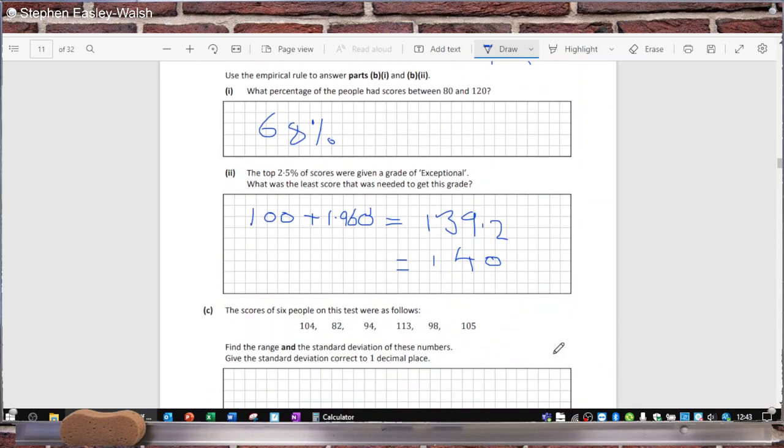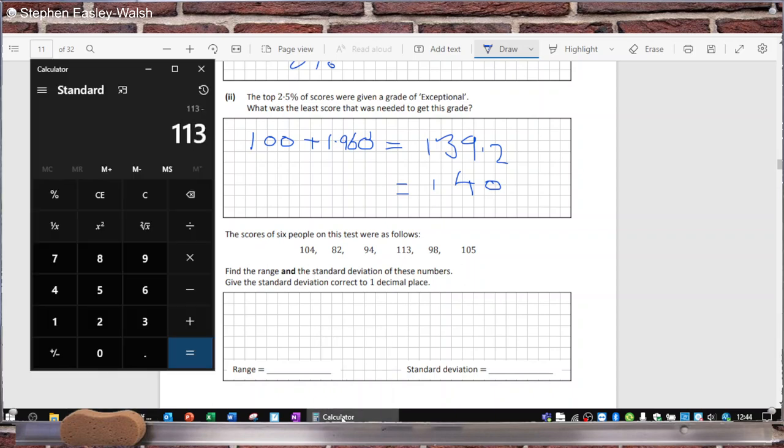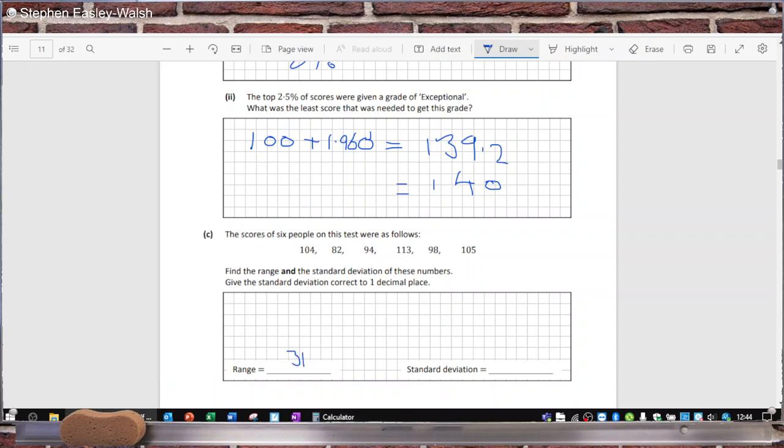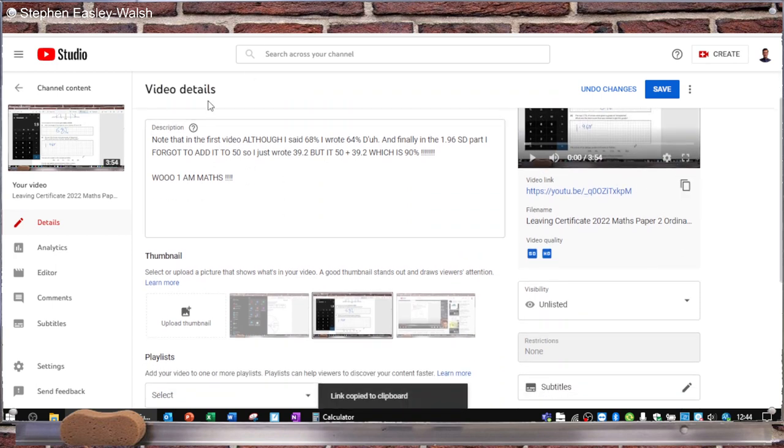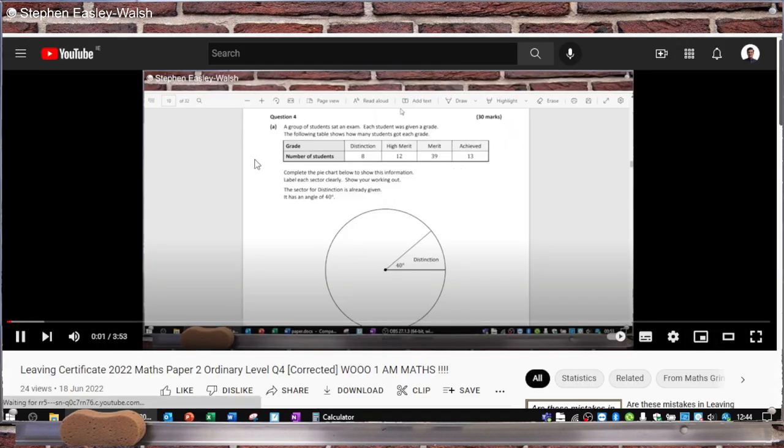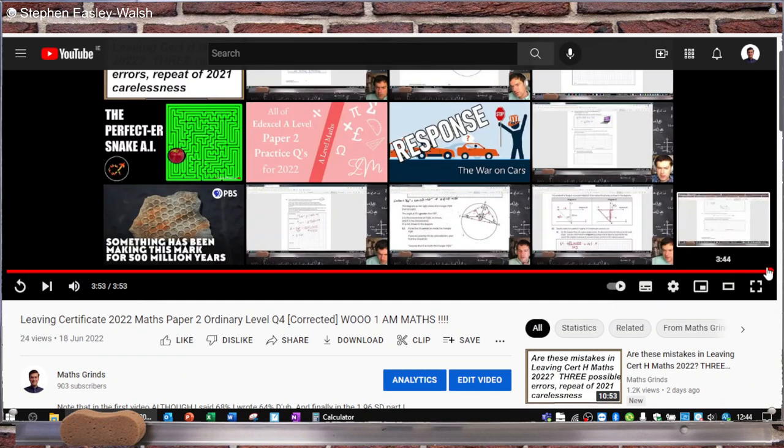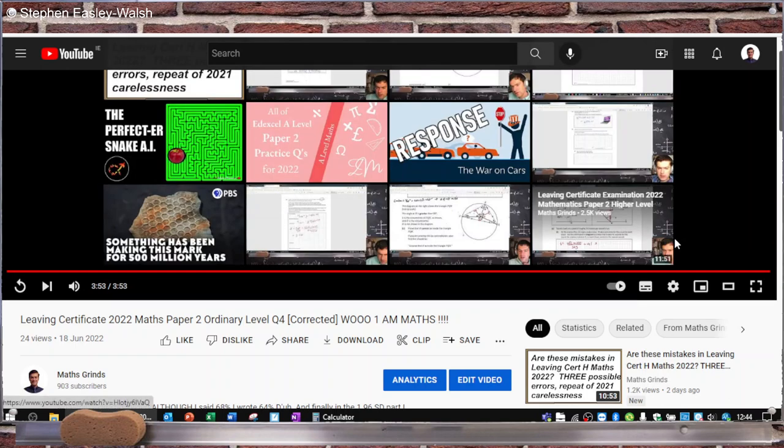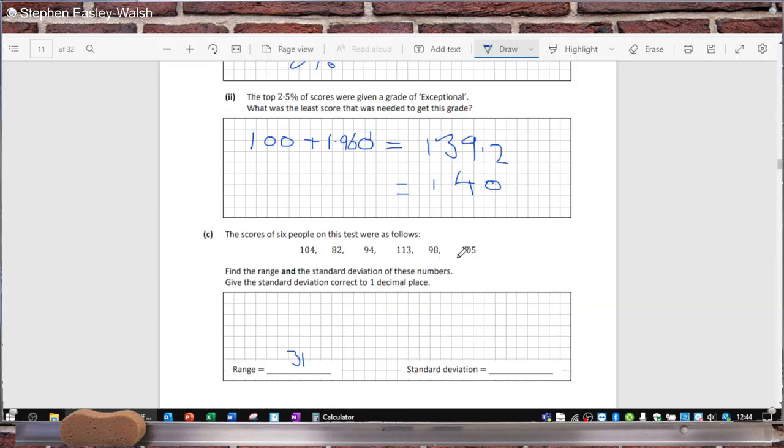And lastly, the range is the biggest, which is 113 minus the smallest. 113 minus 82 is 31. And the standard deviation you can get on the calculator, which I don't have with me right now. So, if I was just to sneak a peek at the original video, and just grab the answer at the end, 9.8 is what the calculator gave me last time.